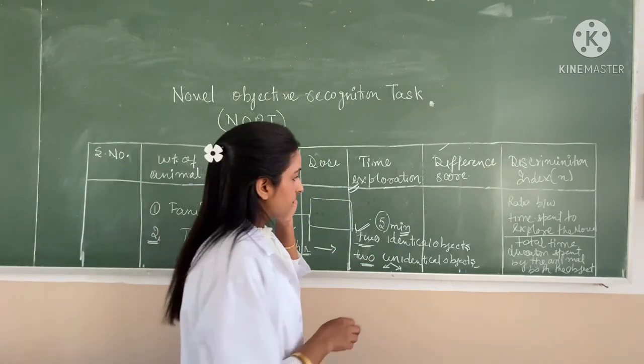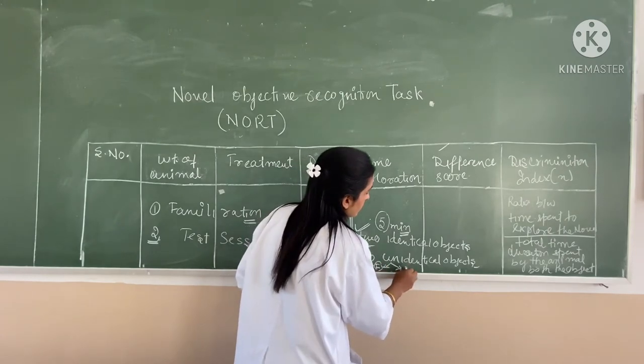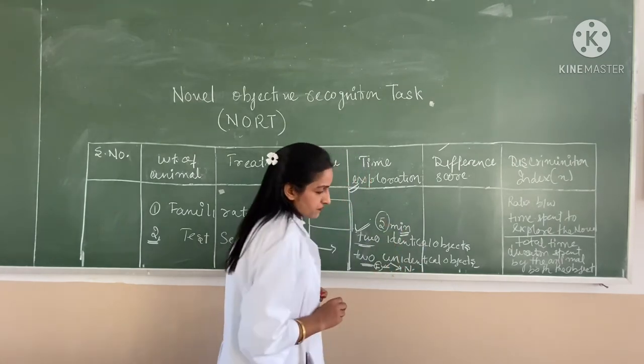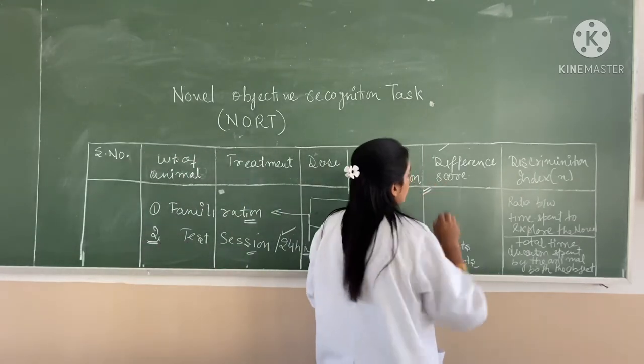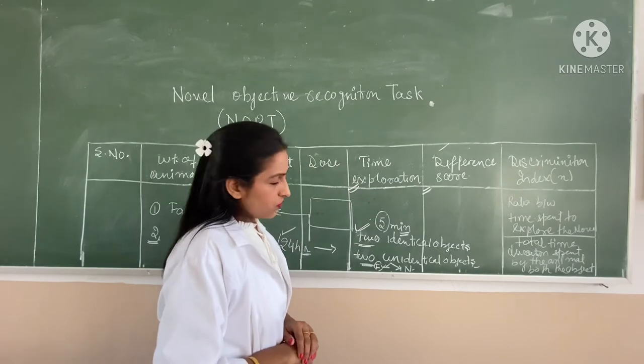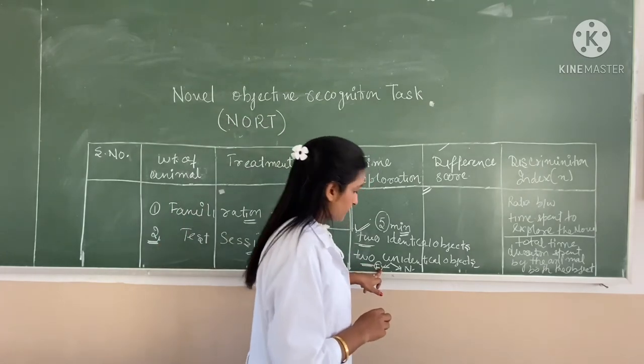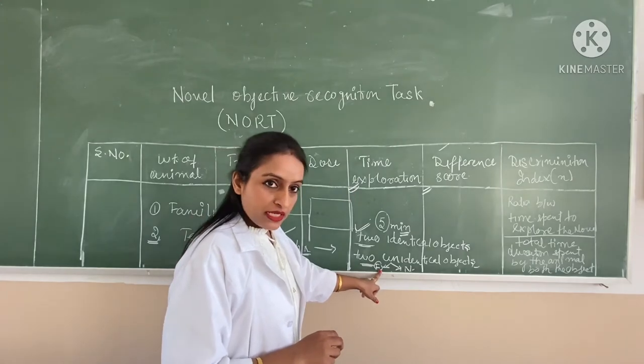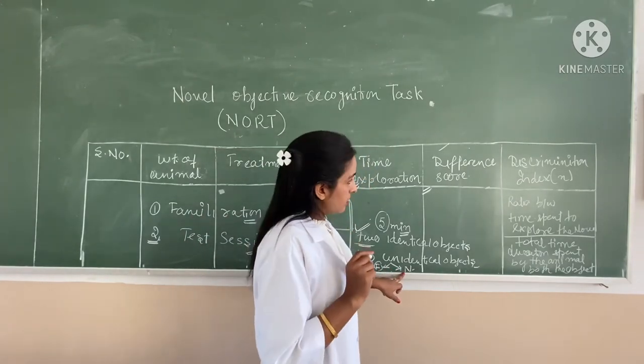As I said, one is familiar object and the second one, the novel object. And after that, we check the difference score. Difference score represents the time duration to explore the familiar object minus time duration to explore the novel object.